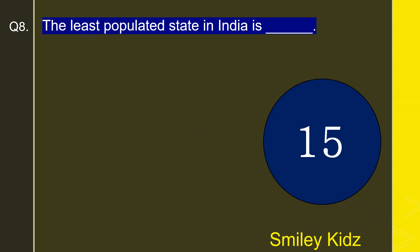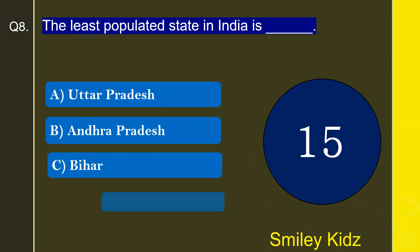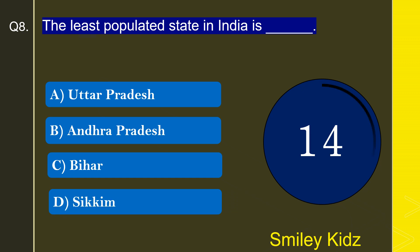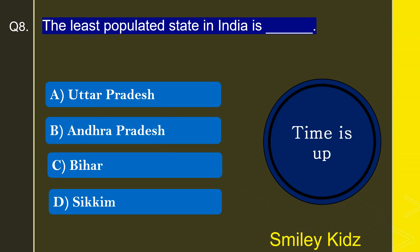Moving to question number 8: The least populated state in India is — Uttar Pradesh, Andhra Pradesh, Bihar, or Sikkim? The correct answer is Sikkim. The least populated state in India is Sikkim.